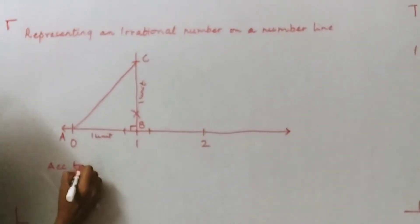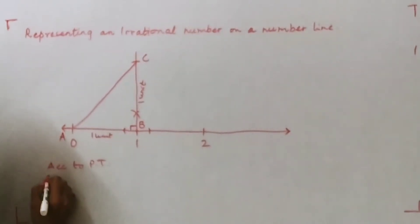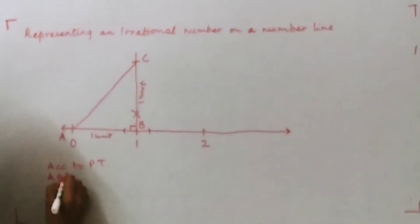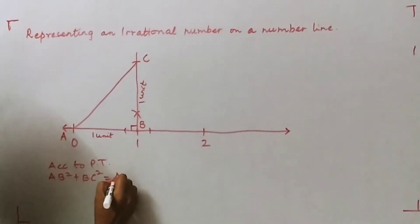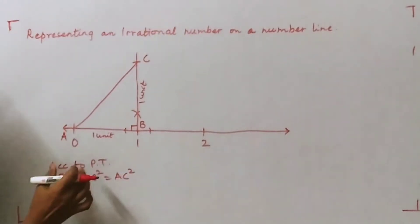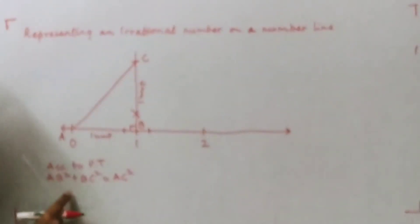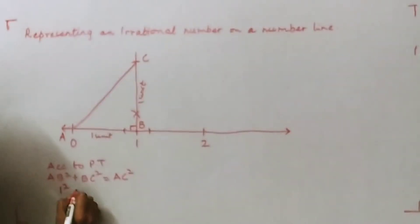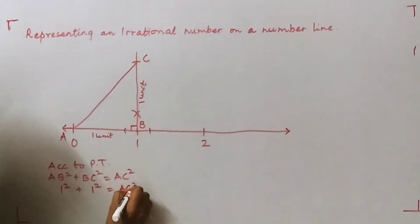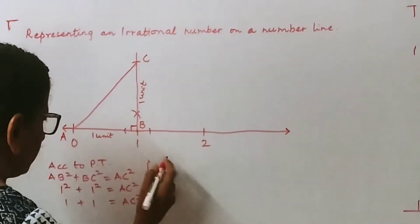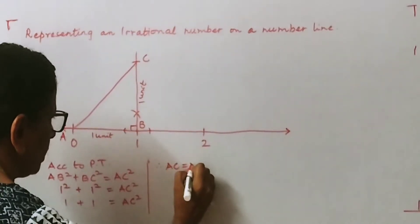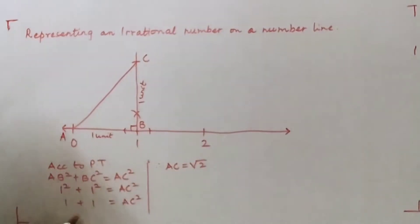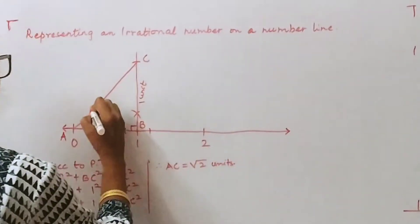According to Pythagoras theorem, AB² + BC² = AC². This means AC² equals the sum of AB² and BC². Substituting the values: 1² + 1² = AC², so 1 + 1 = AC², which gives us AC² = 2. Therefore AC is equal to √2 units.